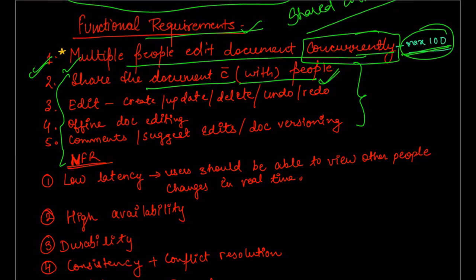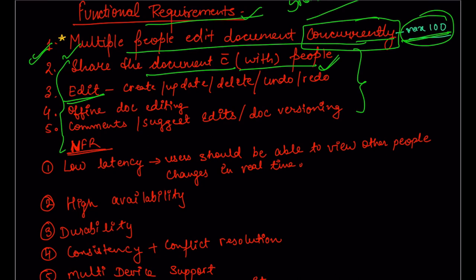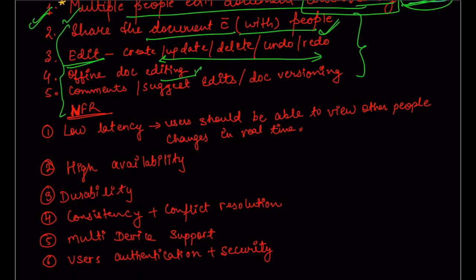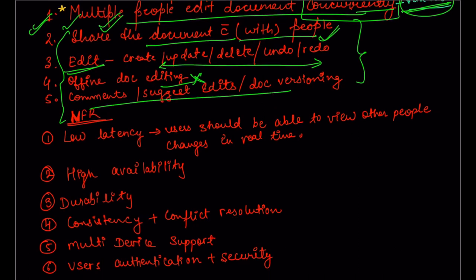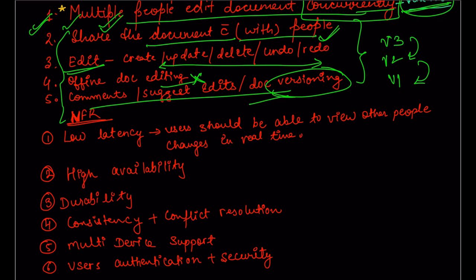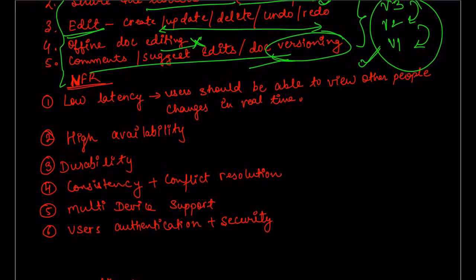Other requirements include sharing the document with other people — if you want multiple people to edit at the same time, you need to share the document and manage permissions, maintaining a database that identifies which user has which edit permissions. Another requirement is editing: create, update, delete operations should all be supported. Offline doc editing is an extension we won't fully discuss, but it involves conflict resolution. Finally, we need comments, suggestions, and document versioning so you can switch between versions V1, V2, V3.